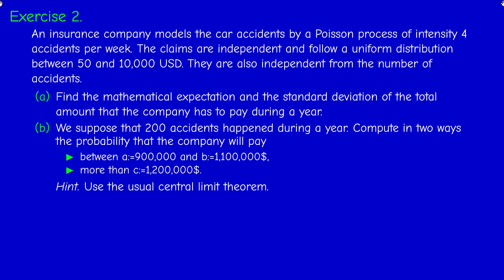The next exercise is about compound Poisson processes. We model car accidents by a Poisson process of intensity 4 accidents per week. The claims are independent and follow a uniform distribution between $50 and $10,000, and are also independent from the number of accidents. We must find the expected value and standard deviation of the total amount the company pays during a year, and then compute the probability of paying between $900,000 and $1,100,000 given 200 accidents occurred, using the central limit theorem.